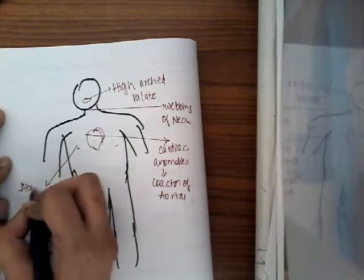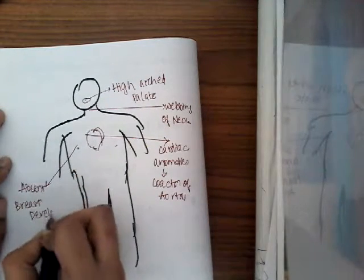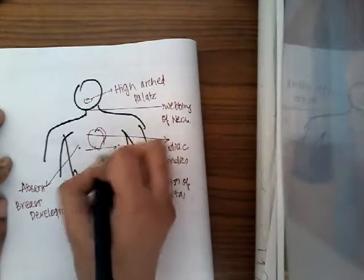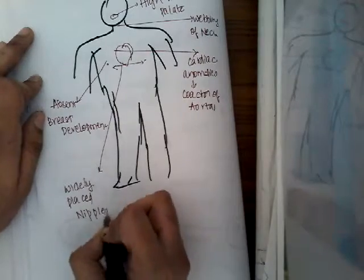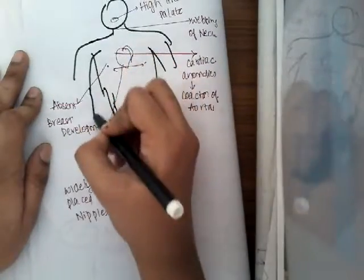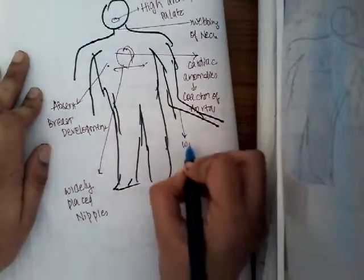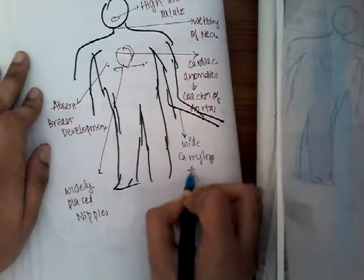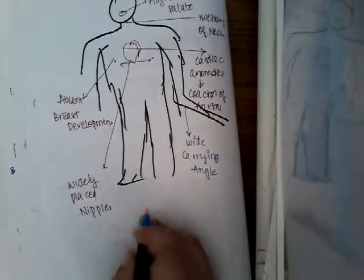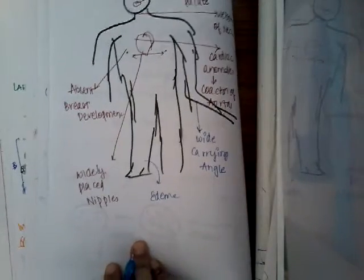There is absent breast development and widely spaced nipples. There is also a wide carrying angle, which is important. There are no secondary sexual characters, so no pubic hair. Edema can also be seen. These are the different clinical features seen in Turner's syndrome.